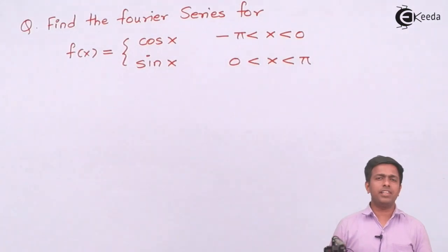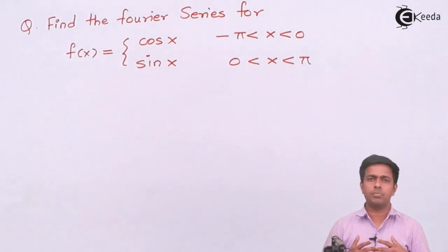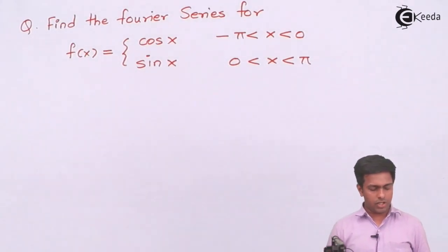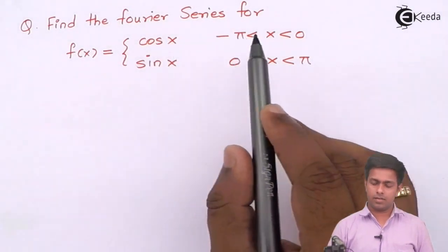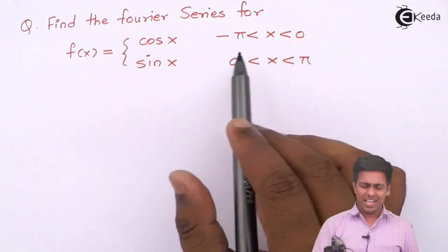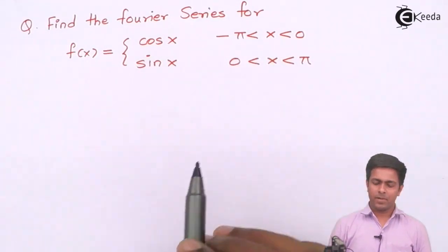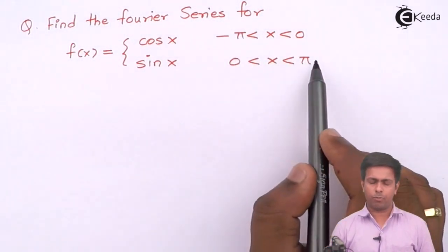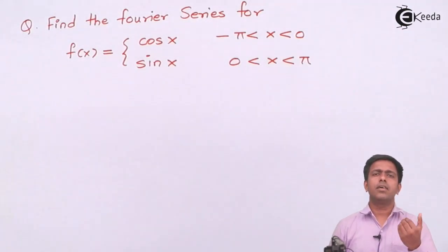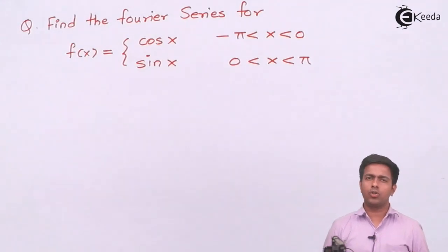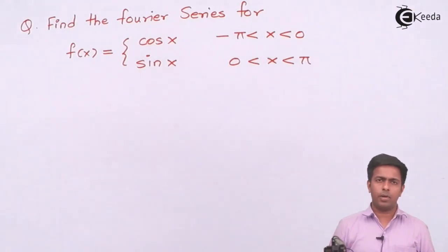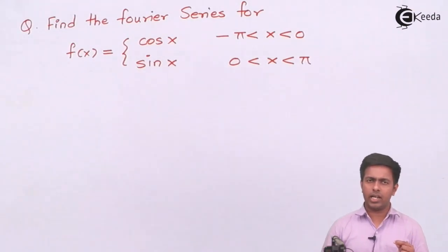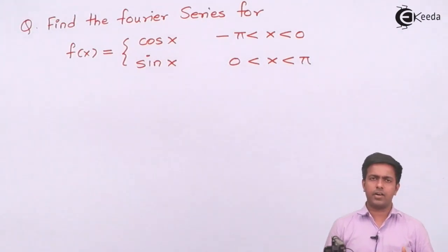Hello friends, in this video we are going to solve a numerical based on Fourier series. We have to find the Fourier series of f(x), where f(x) = cos(x) when x is between -π and 0, and f(x) = sin(x) when x is between 0 and π. The range is from -π to π. I will directly write down the formula and then start with the solution.